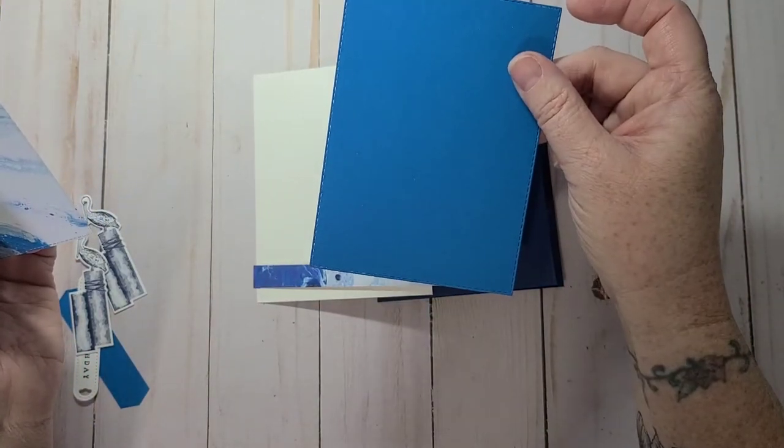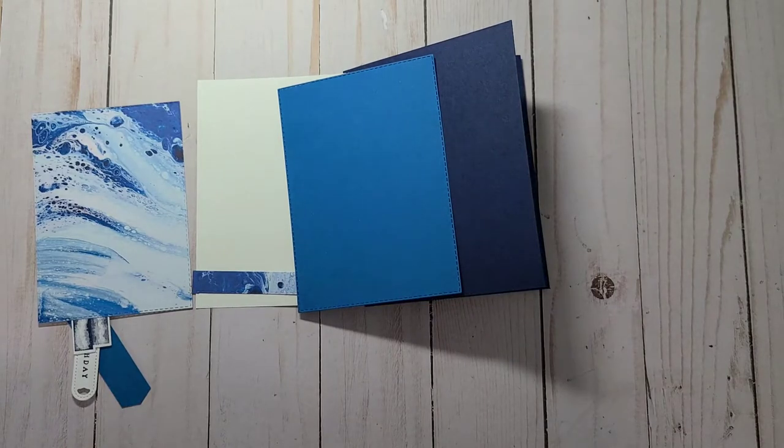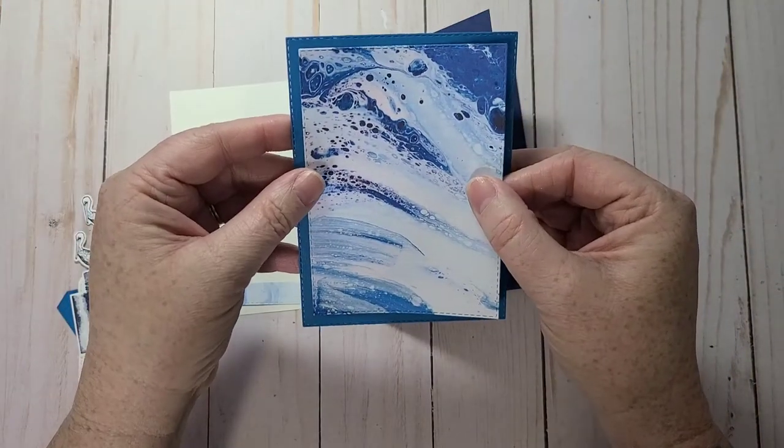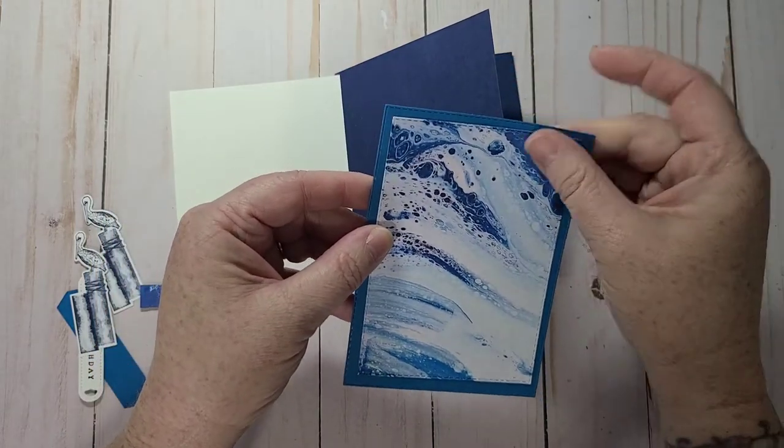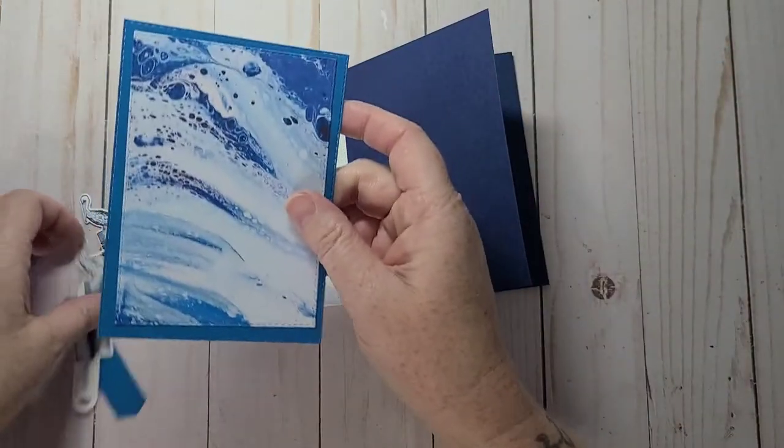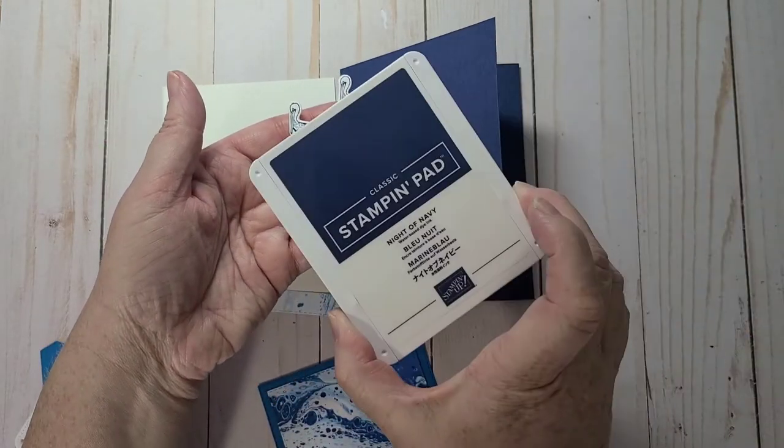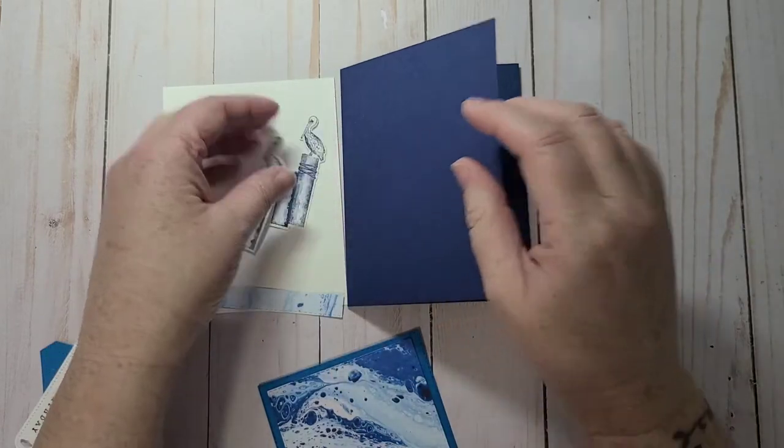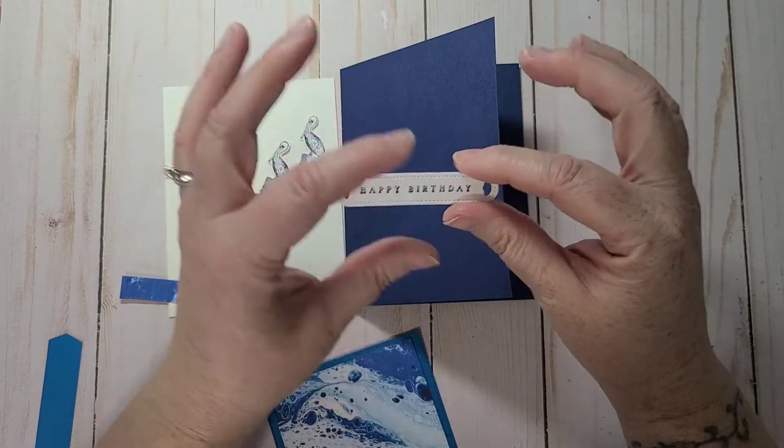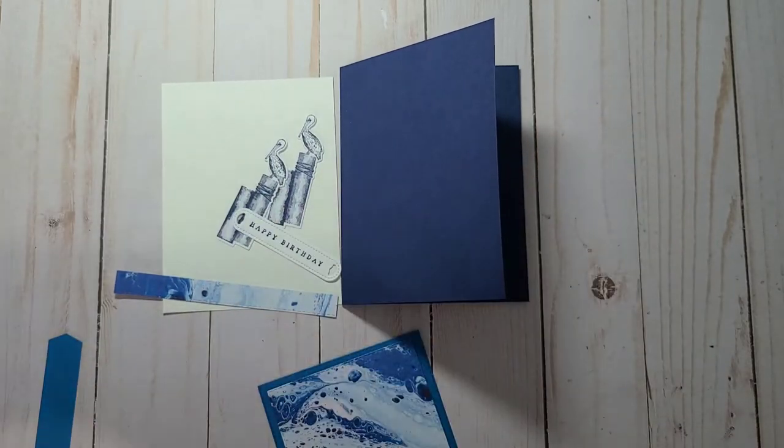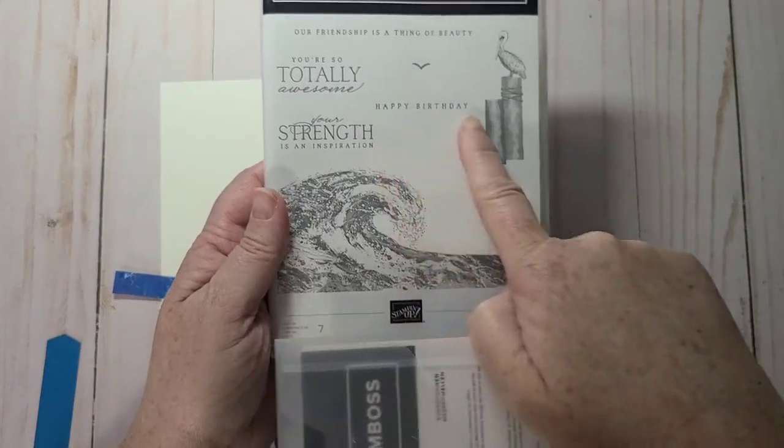The second large rectangle, we have rectangle dies in our annual catalog. I cut out a rectangle in Pacific Point, and then the next size down I cut out the DSP. I stamped and die cut two of the Pelicans in Night of Navy ink. And then I stamped happy birthday in Navy with happy birthday that comes from the same set.